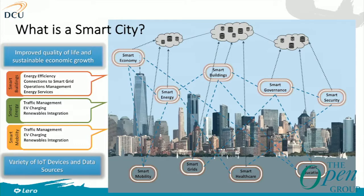One big difference from a purely technical-oriented smart city is that we're fundamentally trying to improve lives and the quality of life, economic situation, and innovation in cities. Everything we do is linked to that overall goal. It's not just because we have devices to combine data — it's actually driven by the goal of improving life in smart cities.